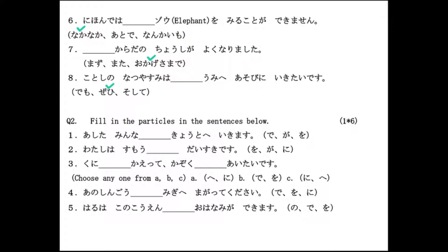In Part A, the second question is: fill in the particles in the sentences. The first sentence is 'Ashita minna ___ Kyoto e ikimasu.' The correct particle is de, meaning 'together with': 'Ashita minna de Kyoto e ikimasu.' The second sentence is 'Watashi wa sumo ___ daisuki desu.' When ga is used with adjectives or verbs denoting preference or wish, such as suki, kirai, hoshi, etc., the object is indicated by ga. So the correct option is ga: 'Watashi wa sumo ga daisuki desu.'